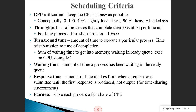The next criterion is throughput — the number of processes that complete their execution per unit of time. For long processes, you might complete only one per hour, whereas for short processes you can expect 10 or more per second. It depends on the nature of the processes and the efficiency of the scheduling algorithm. With short processes, more can be completed overall.